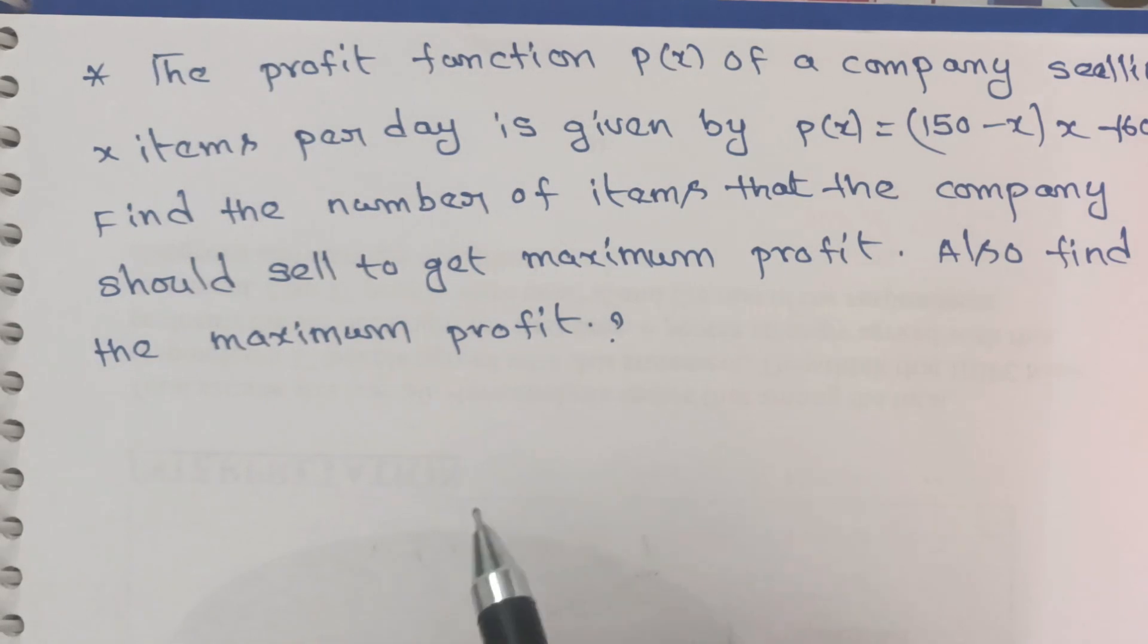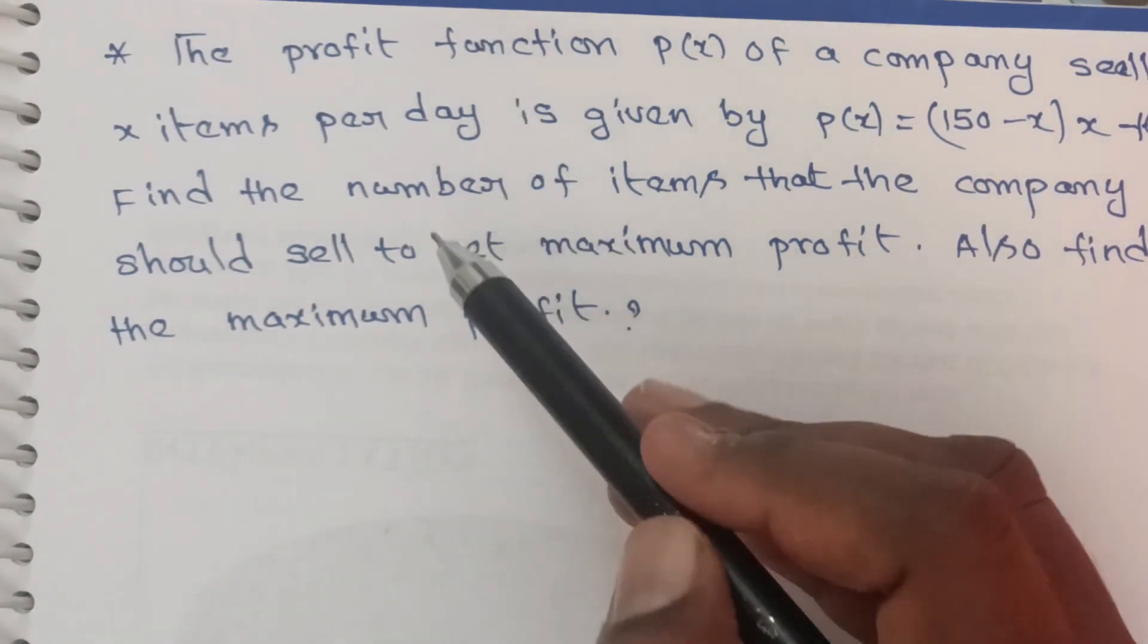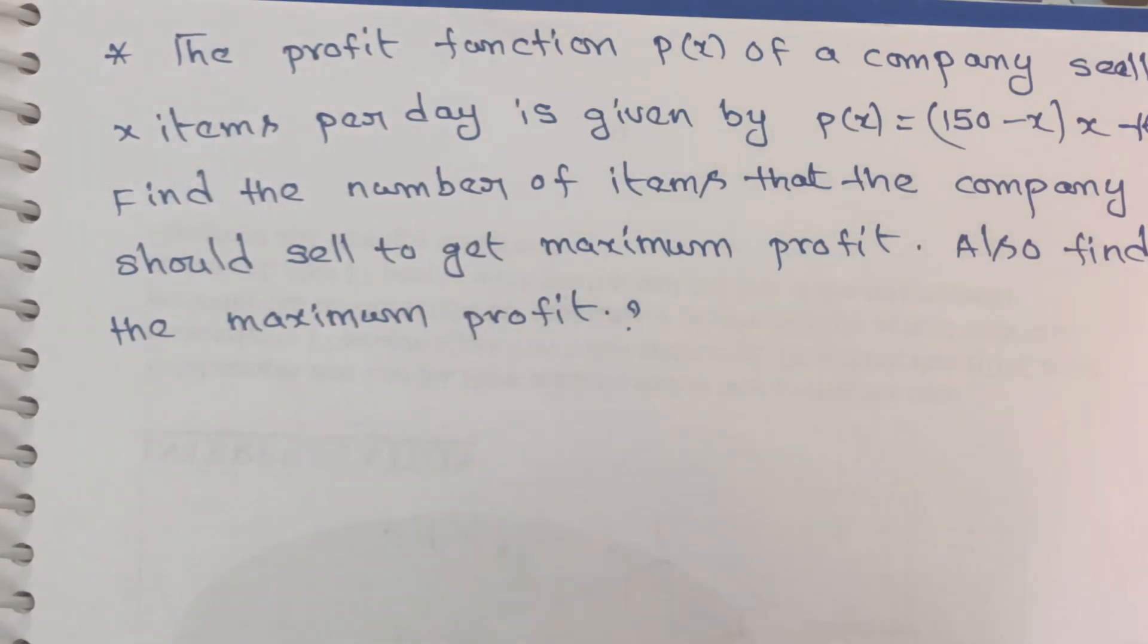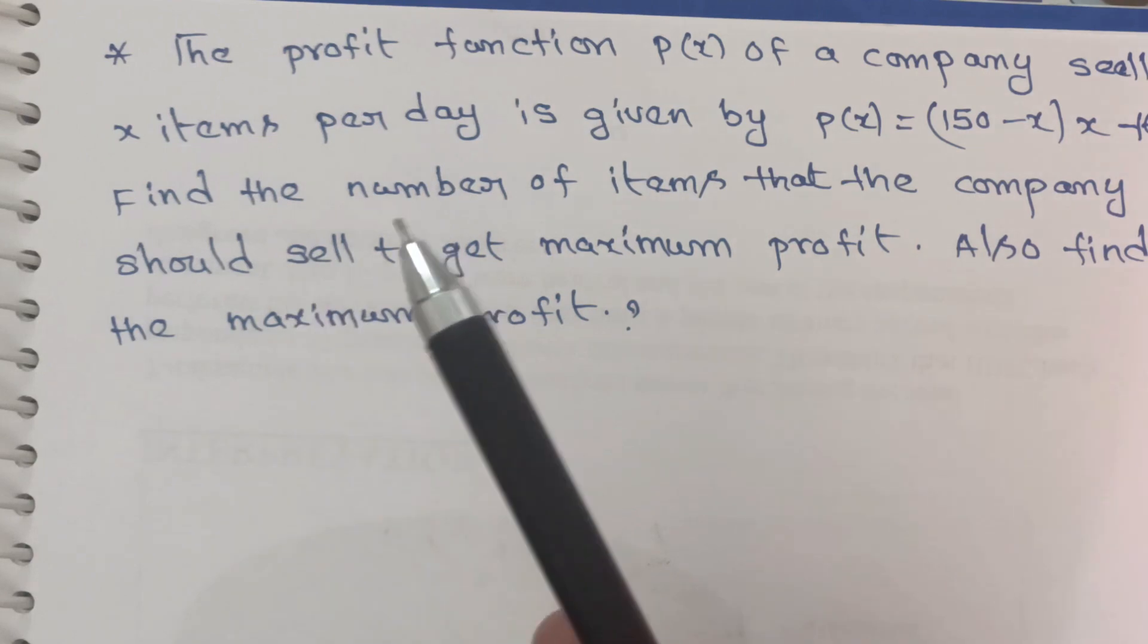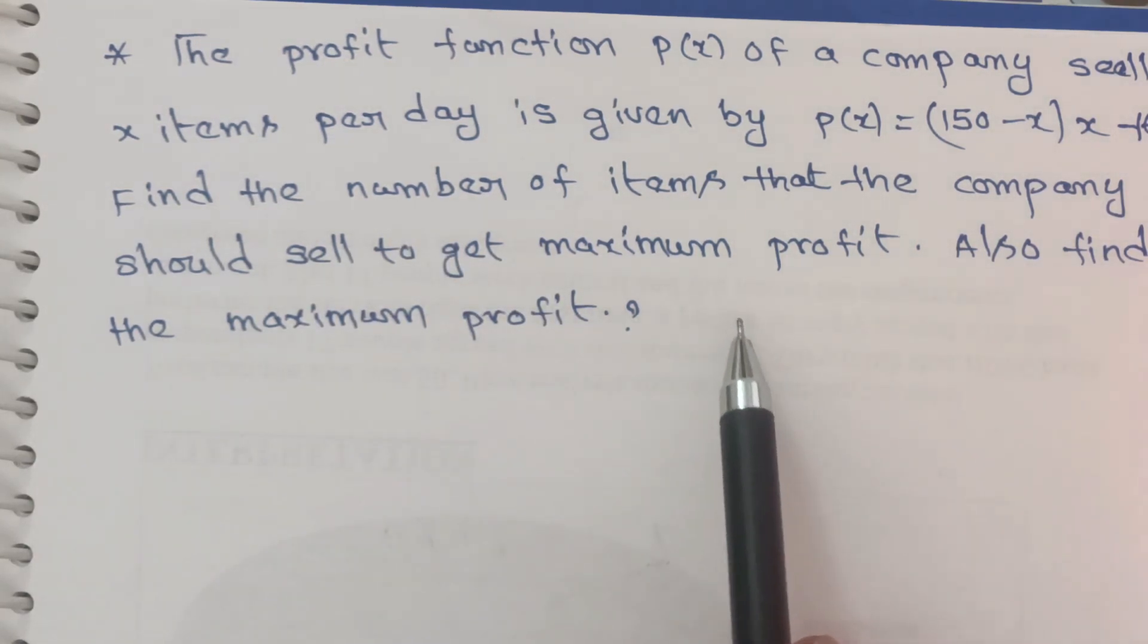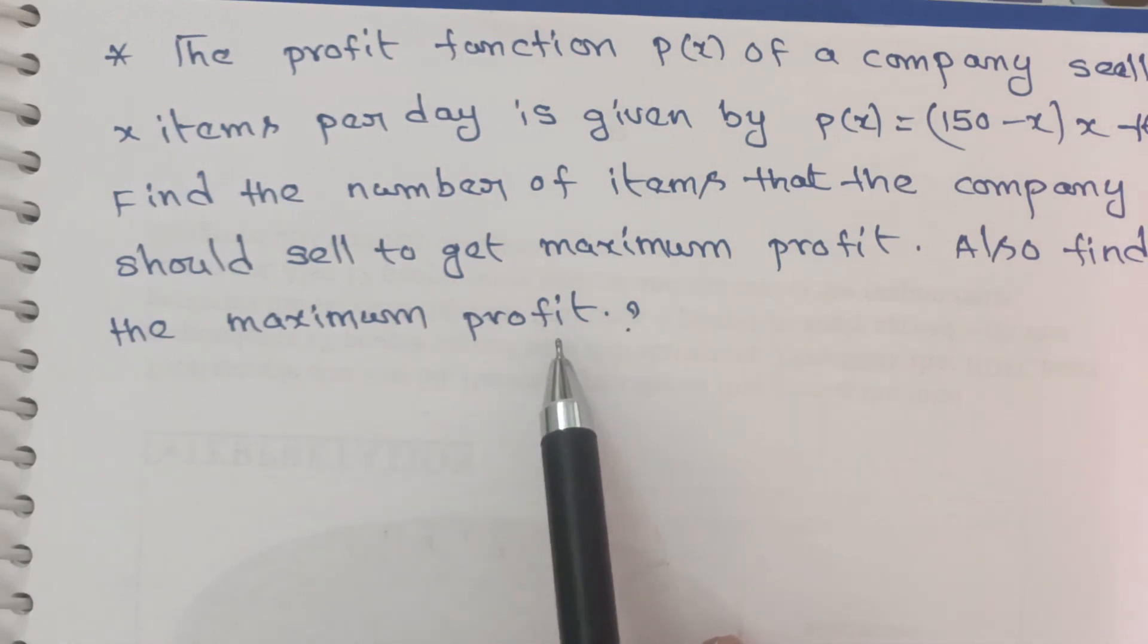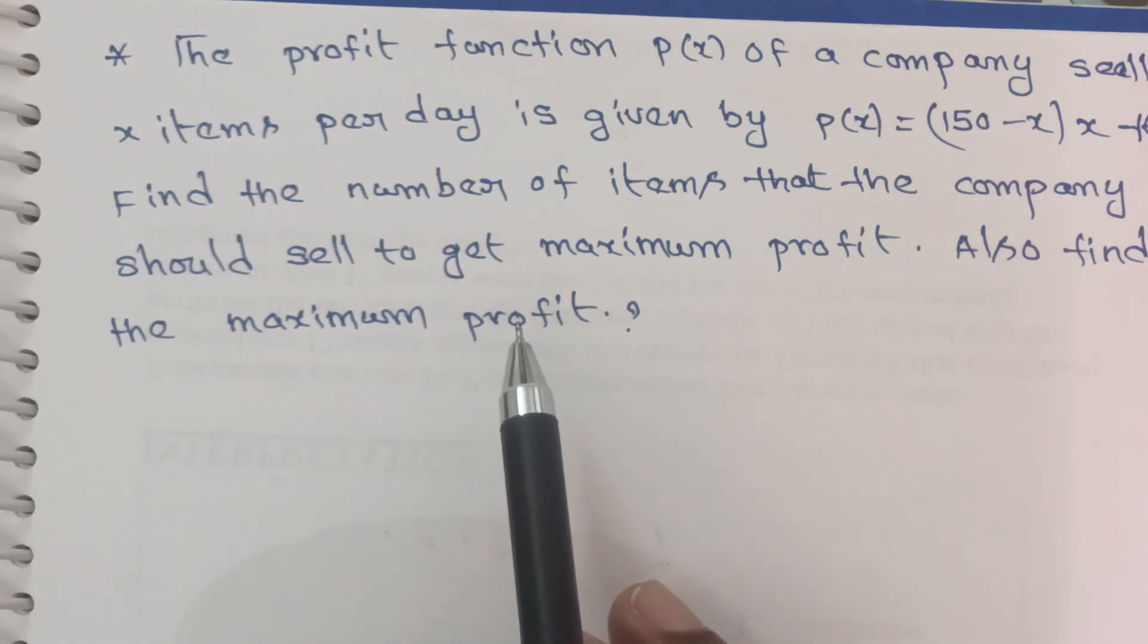So in maximum minimum problems, the question can be solved using calculus. First, we have the profit function - the company sells items for a day and we need to find out the maximum profit, which occurs when sales reach a certain value that maximizes the profit function.